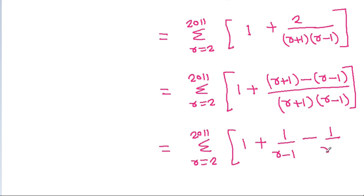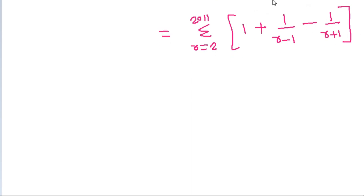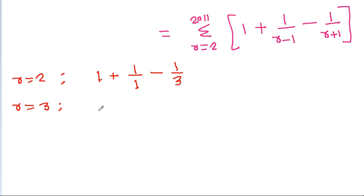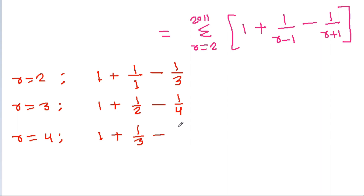When r=2, this equals 1 plus 1/(2-1) minus 1/(2+1), which is 1 plus 1/1 minus 1/3. When r=3, it equals 1 plus 1/2 minus 1/4. When r=4, it equals 1 plus 1/3 minus 1/5. When r=5, it equals 1 plus 1/4 minus 1/6.